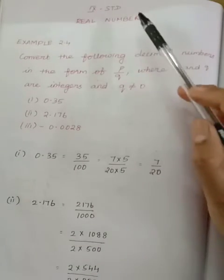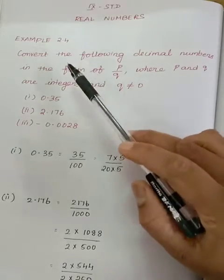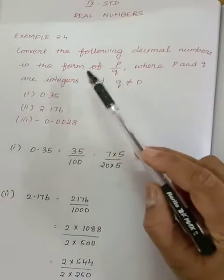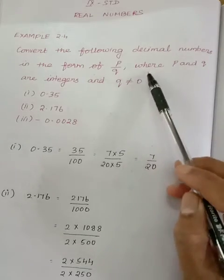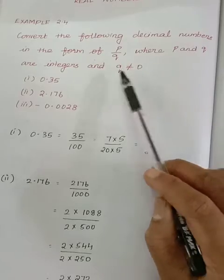Hi children, today we are going to learn 9th standard real numbers example 2.4. Convert the following decimal number in the form of P by Q where P and Q are integers and Q not equal to 0.